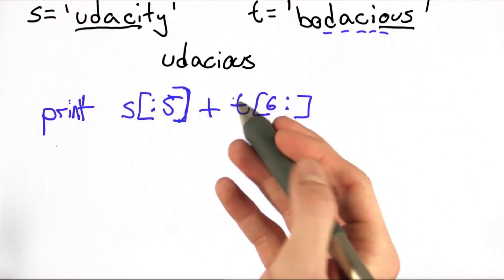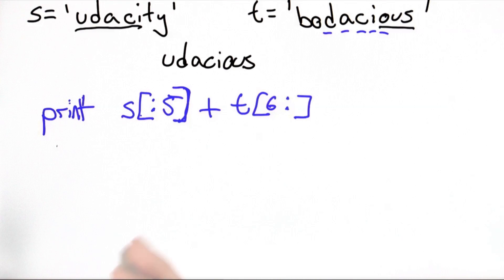This will print out eudacious without using any quotes, as you can see. But there's another solution if you're a true Python guru. Let's go to the interpreter to try that out.